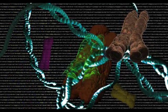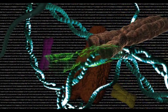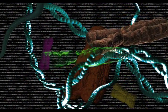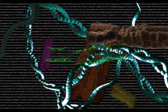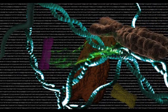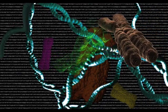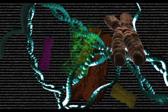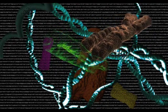Now that we understand how variety can arise in individual genomes, we are prepared to tackle the second question: How does this variety give rise to new species? There are two major answers to this second question: natural selection and genetic drift.